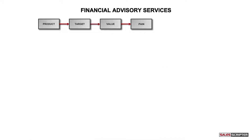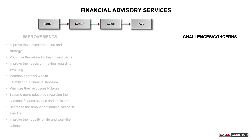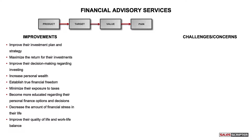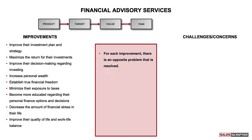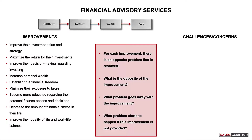The next step is to think about the pain that you can make go away or decrease with your product or service. We're trying to identify between three to six different challenges or concerns your product can address for your target buyer. Here's a trick: bring back the improvements you just came up with, because for each improvement, there's an opposite problem that's resolved. Look at each improvement and ask: what is the opposite of that improvement? What problem goes away when we create that improvement? The pain points will be different for individuals than for businesses.